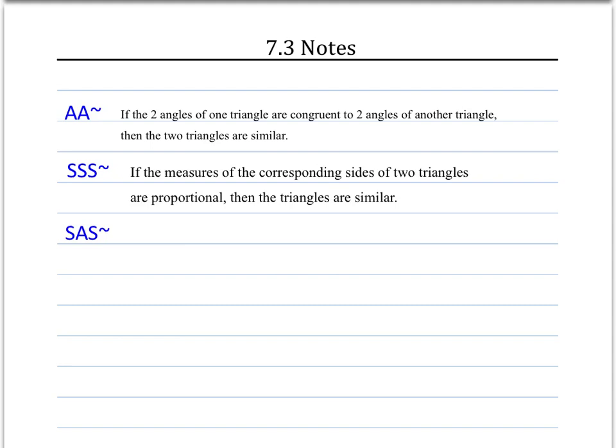The next similarity statement we want to examine is SSS similarity. That states if the measures of corresponding sides of two triangles are proportional, then the triangles are similar. That word proportional is extremely important. Proportions are essentially ratios set equal to each other — in other words, fractions of sides. Let's examine what it means for sides to be proportional.